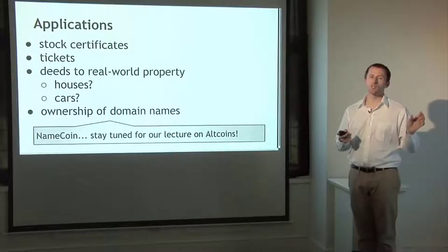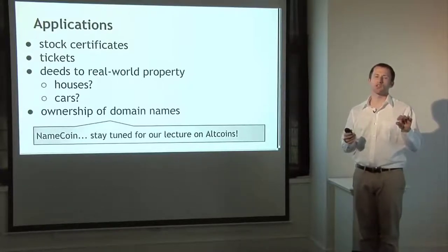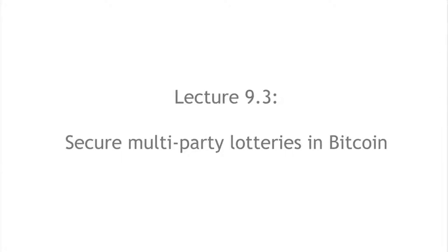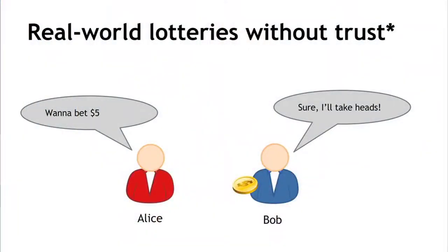You could do domain name ownership with simple colored coins, but in practice there are enough extra properties to enforce that the community has been pursuing a separate altcoin for that. Now we're going to change gears and talk about doing a multi-party lottery in Bitcoin in a secure way. We'll start with the offline version: how would we do a real-world lottery between two people without any trust? If Alice and Bob want to bet five bucks, they'll both agree to a bet, Bob will flip a coin, one of them will call it, and they'll trust this was a random process.